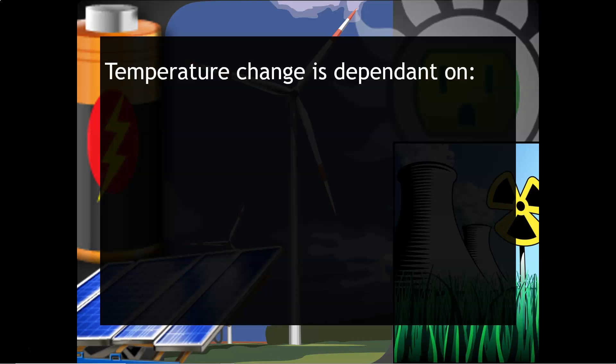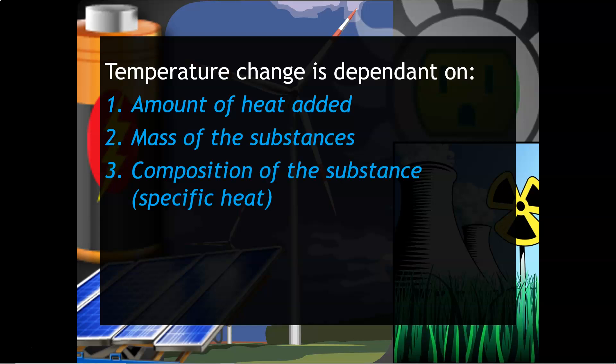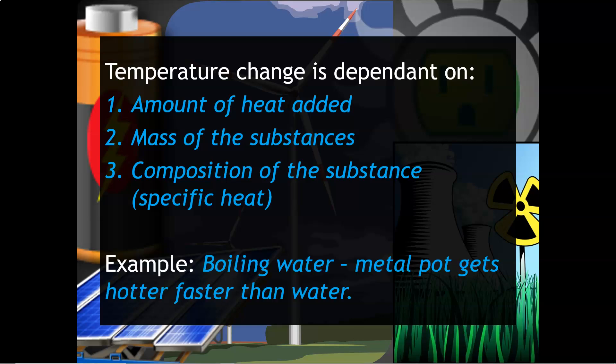Temperature change is dependent on the amount of heat added, the mass of the substance, and the composition or the specific heat of the substance. For example, boiling water - you know that the metal pot will get much warmer a lot faster than the water inside the pot.